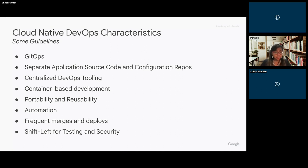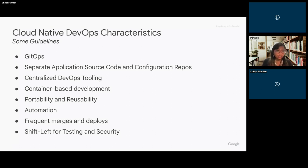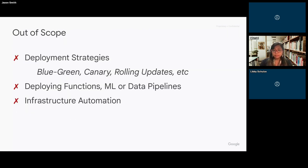Automation is a key DevOps principle in the cloud native world. Frequent merges and deploys are important, as is the movement of shifting left — doing more testing and security early on in the build process rather than after the fact. Security and testing are now baked in across the board rather than discovered when something is already running in production.